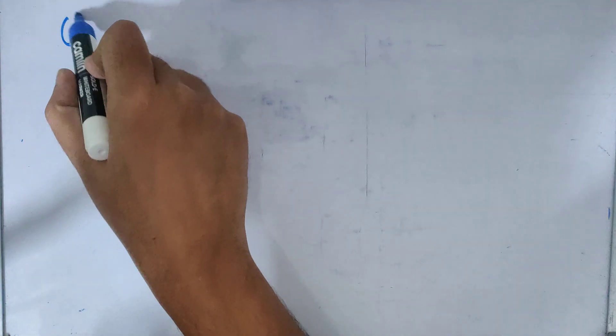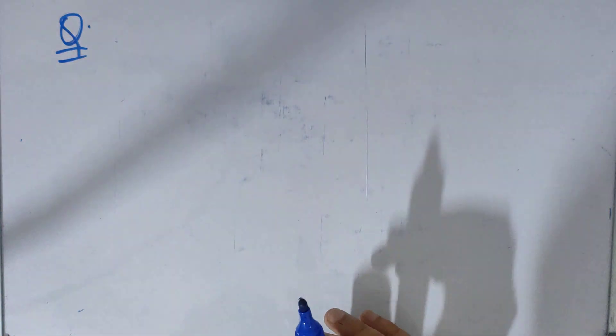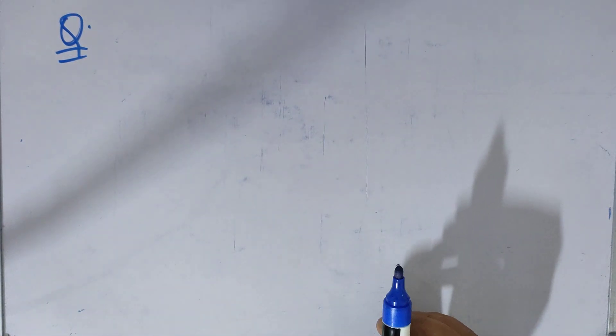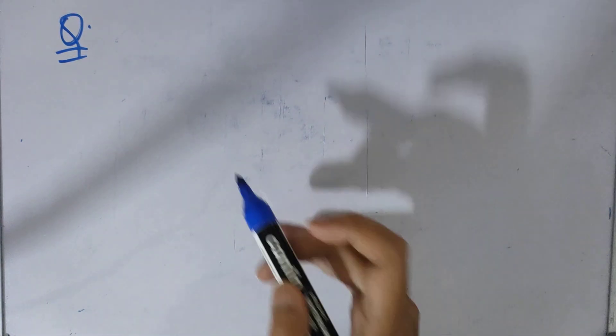Hello everyone, hope you all are doing well. Today we are going to do the next question of our agriculture optional answer writing practice. The question we are going to do today is write a short note on microbial toxins.